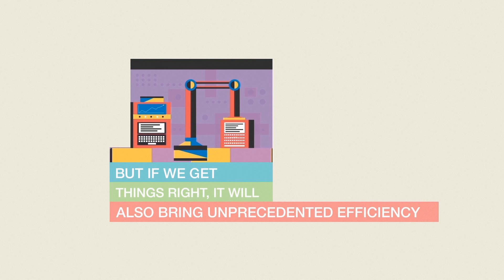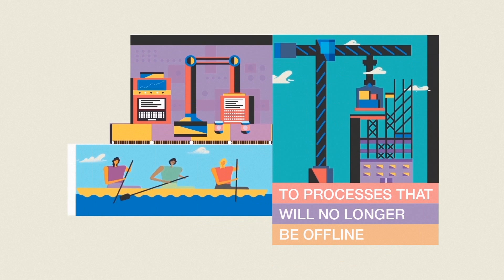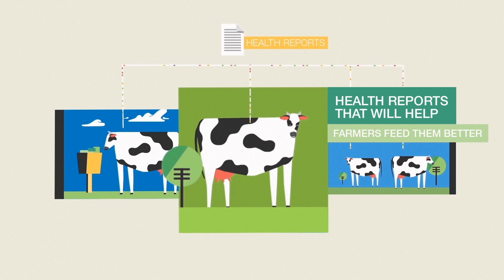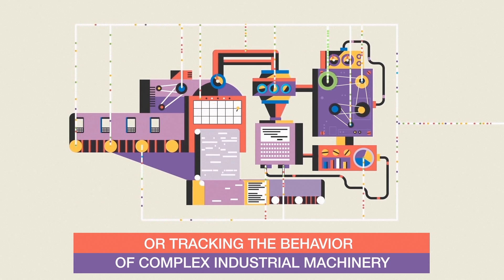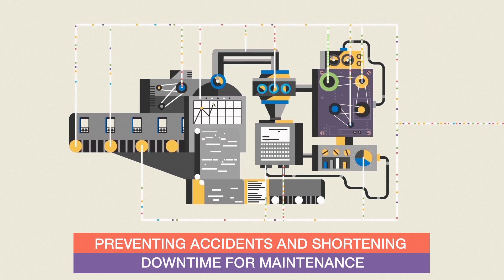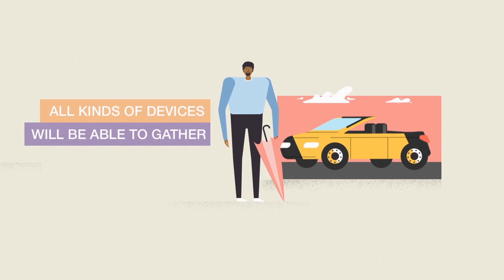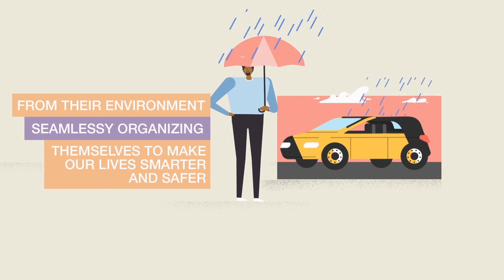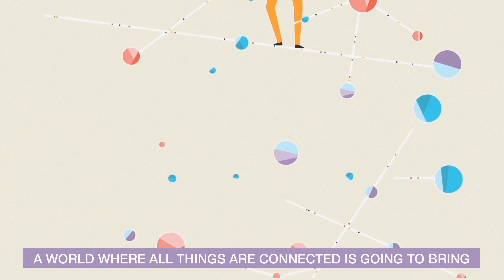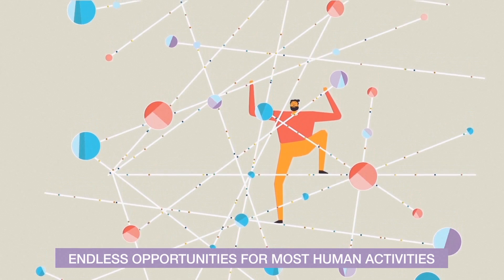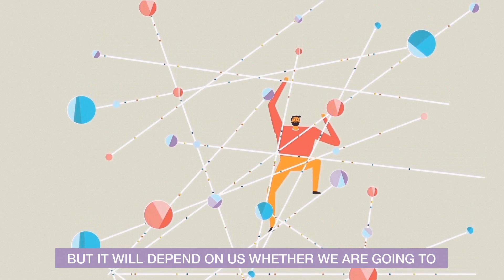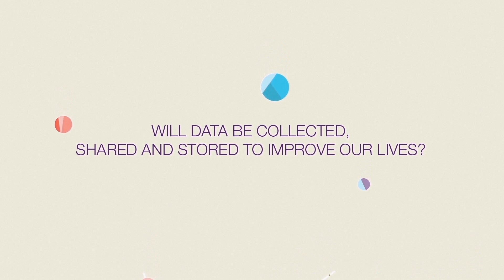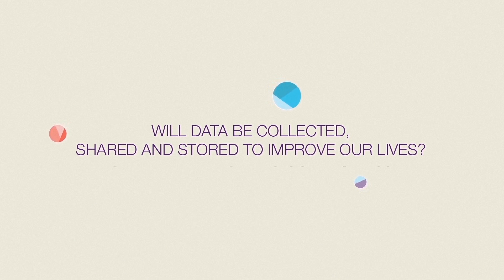But if we get things right, it will also bring unprecedented efficiency to processes that will no longer be offline. Imagine cows on a farm being monitored to obtain health reports that will help farmers feed them better, or tracking the behaviour of complex industrial machinery, preventing accidents and shortening downtime for maintenance. All kinds of devices will be able to gather and share any type of information from their environment, seamlessly organising themselves to make our lives smarter and safer. A world where all things are connected is going to bring endless opportunities for most human activities, but it will depend on us whether we are going to take advantage of it, or let it take advantage of us. Will data be collected, shared, and stored to improve our lives? Or will it be used to control us?